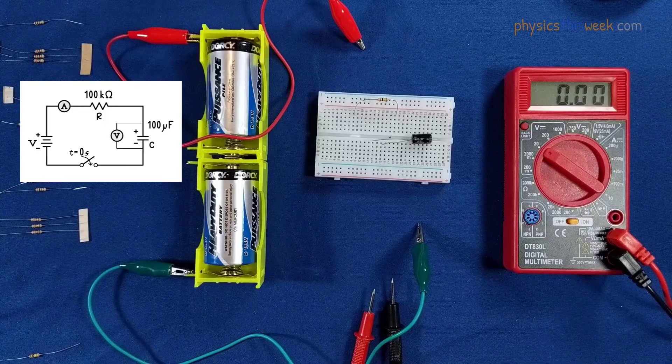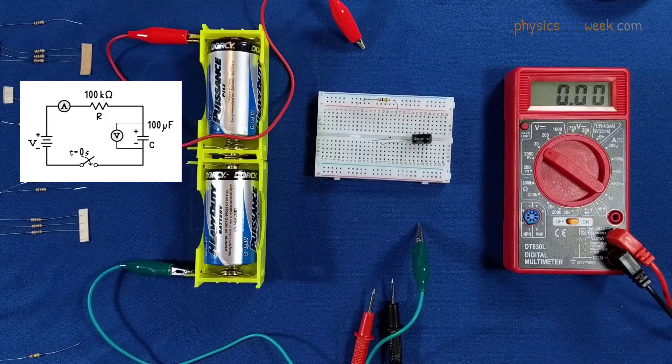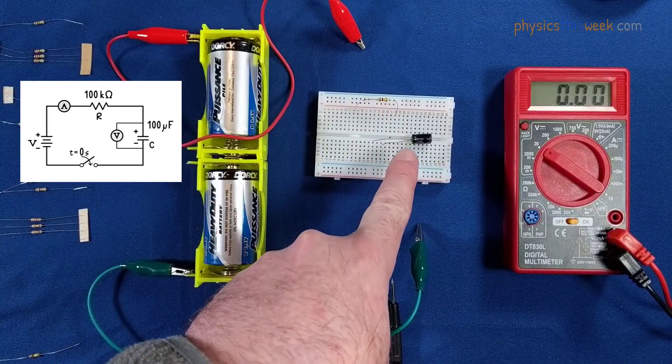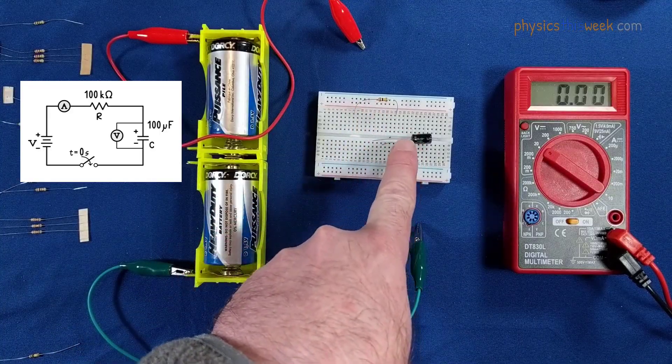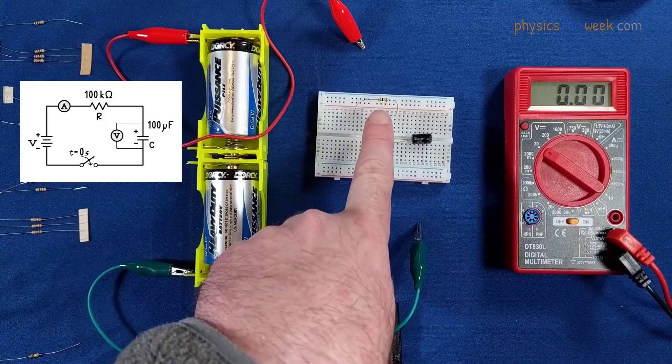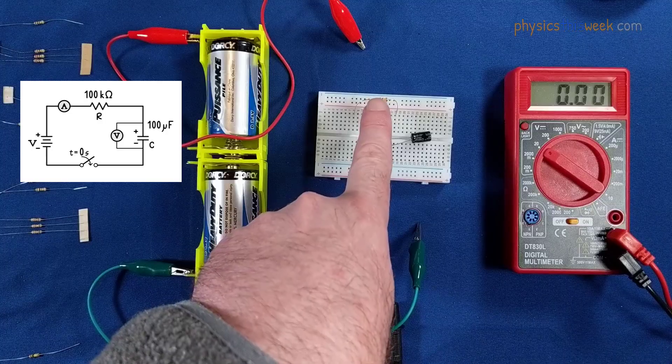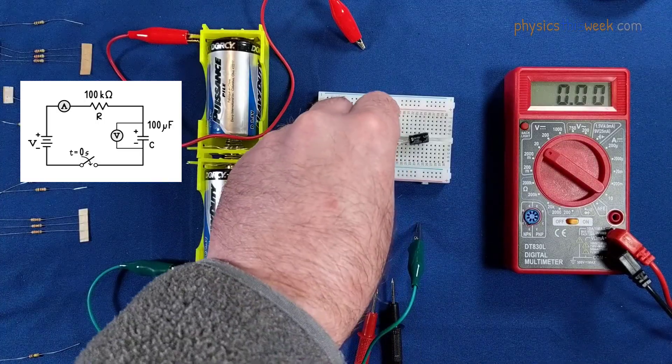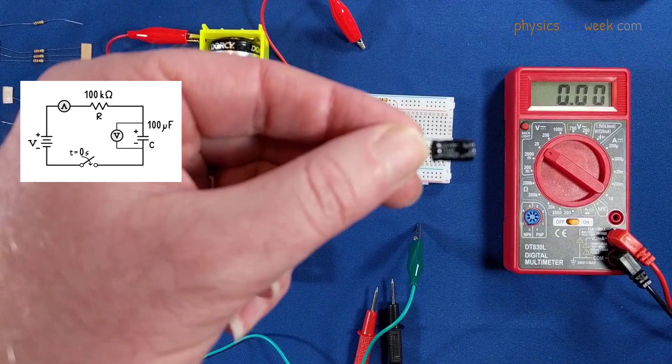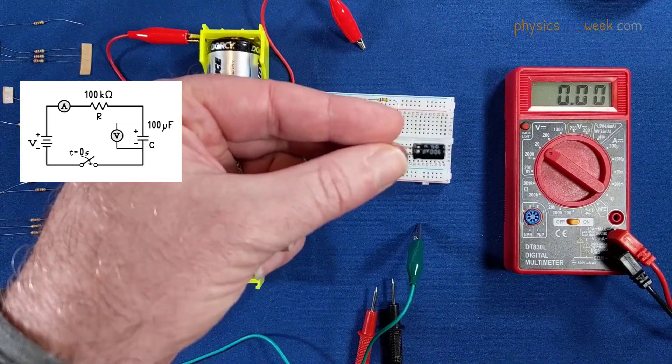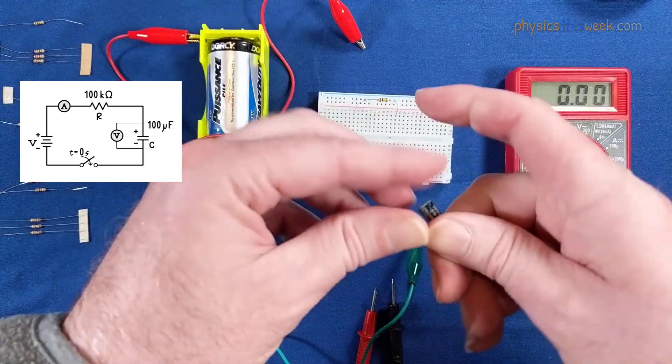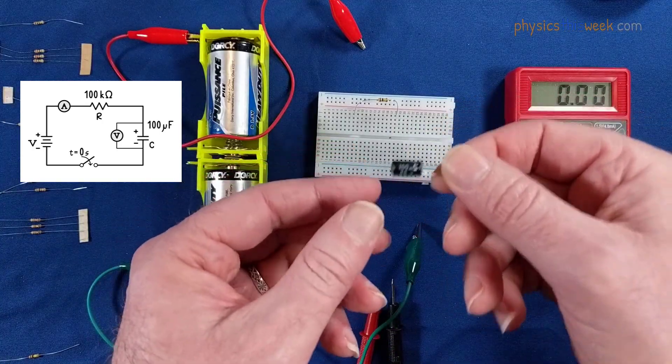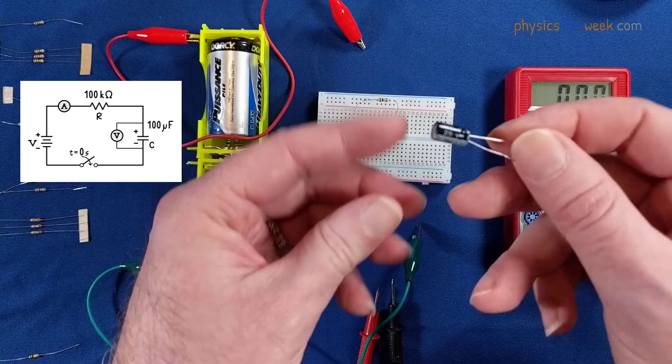Okay, we are now ready to measure the resistor capacitor circuit, known as an RC circuit. The resistor in this situation is a 100 kilohm resistor, so that's 100,000 ohms of resistance. And the capacitor is a 100 microfarad capacitor.